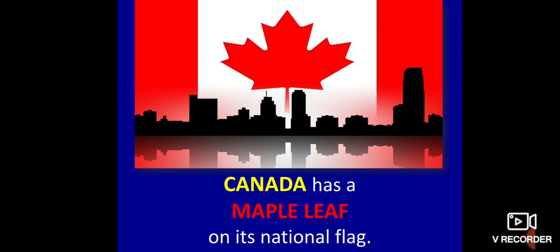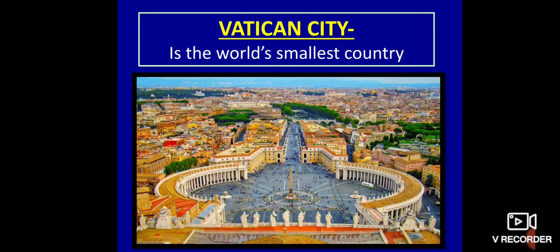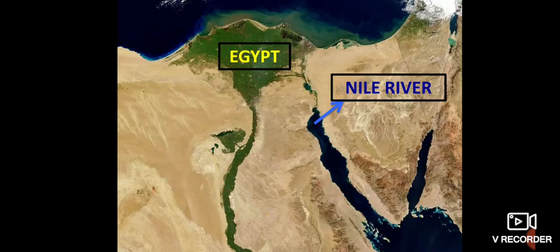And of course, the maple leaf on the national flag of Canada — I have told you about this as well. Vatican City, the world's smallest city. And about this river — the connection between Egypt and the Nile River. The Nile River is the longest river in the world, and because of this river, Egypt is green. Otherwise, Egypt would have been a deserted place.